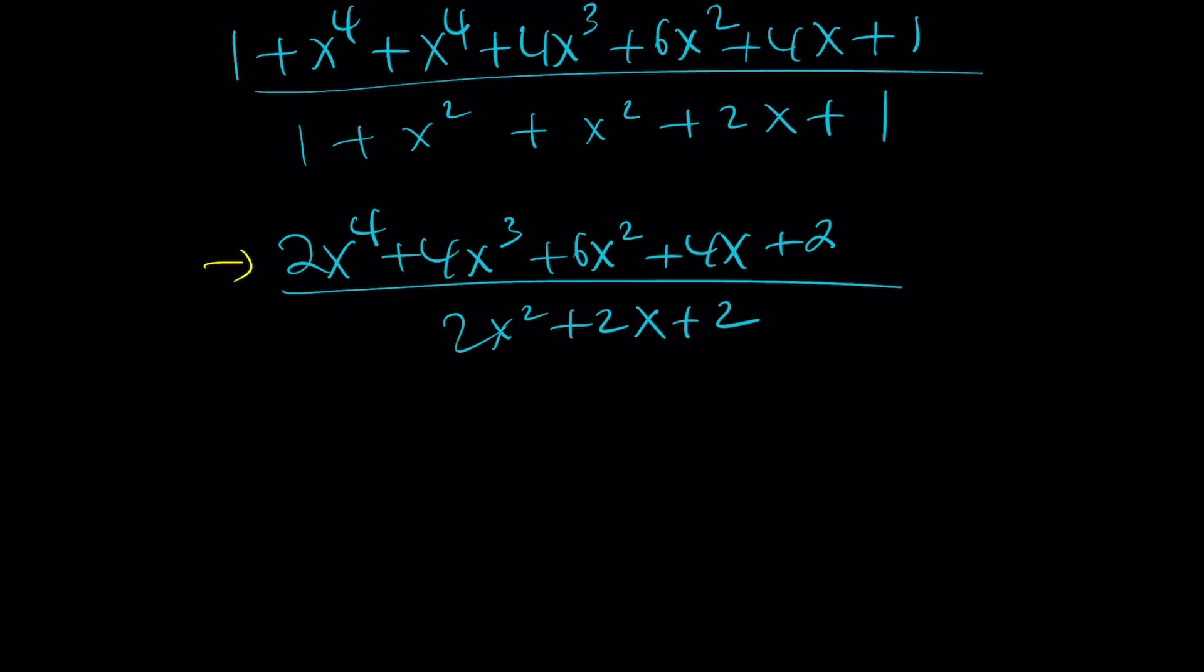2 is a common factor for both the numerator and the denominator. So let's divide both of these by 2. We get x to the 4th, plus 2x cubed, plus 3x squared, plus 2x, plus 1, all over x squared, plus x, plus 1. Awesome.